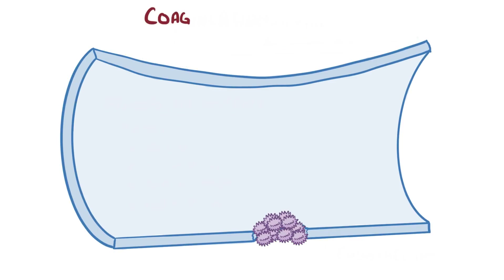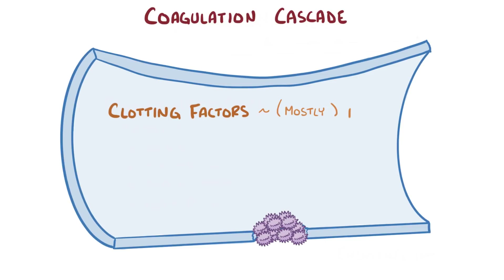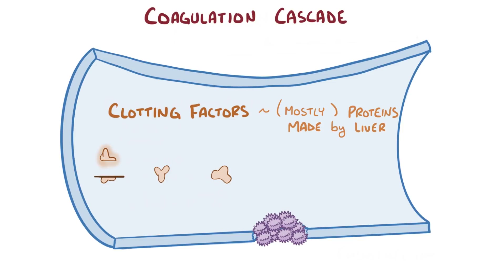After that, the coagulation cascade is activated. In the blood, there's a set of clotting factors, most of which are proteins synthesized by the liver, and usually these are inactive and just floating around in the blood. The coagulation cascade starts when one of these proteins gets proteolytically cleaved. This active protein then proteolytically cleaves and activates the next clotting factor, and so on.